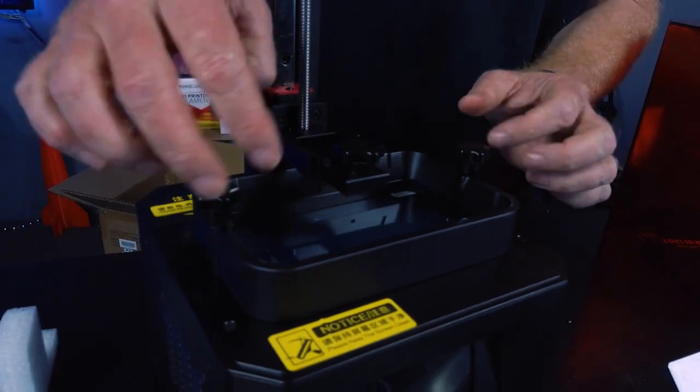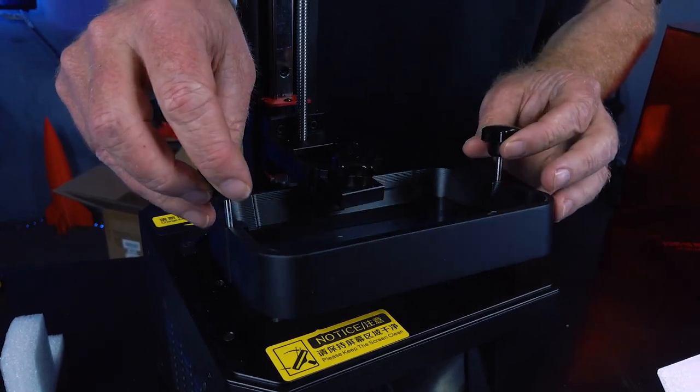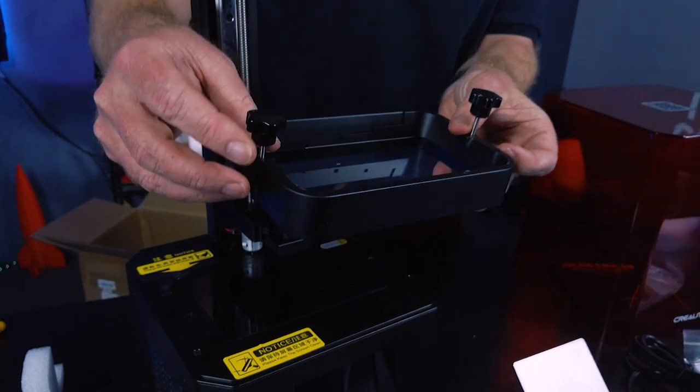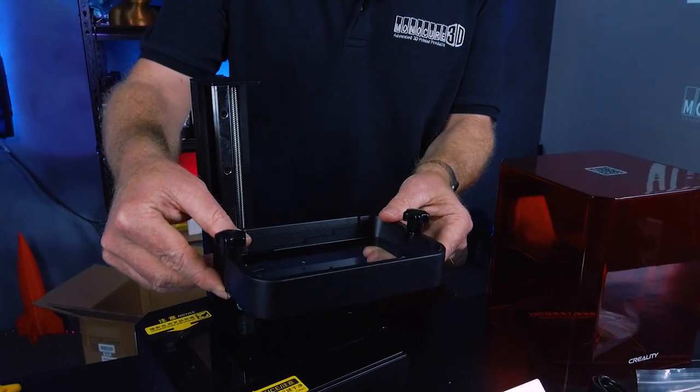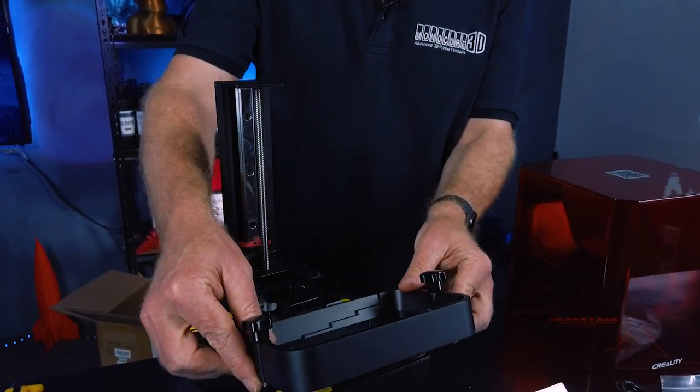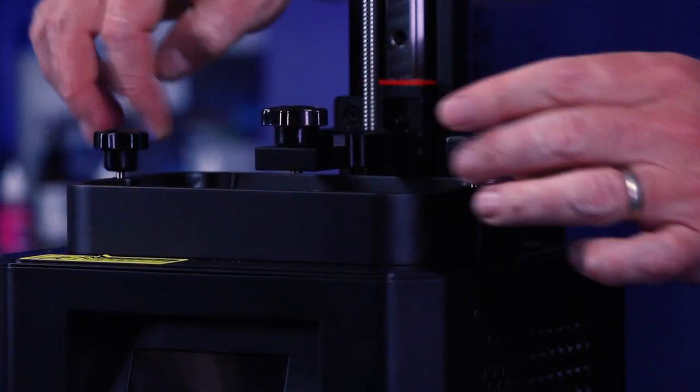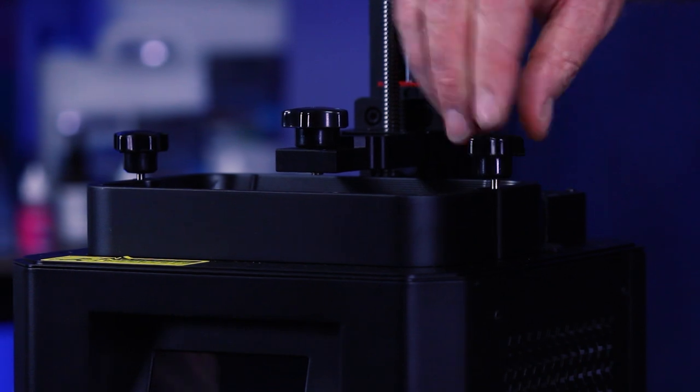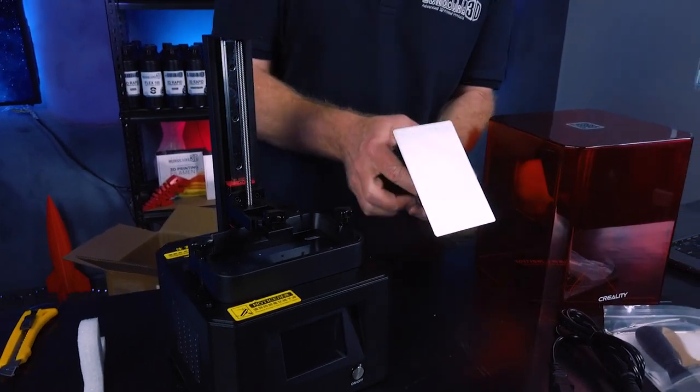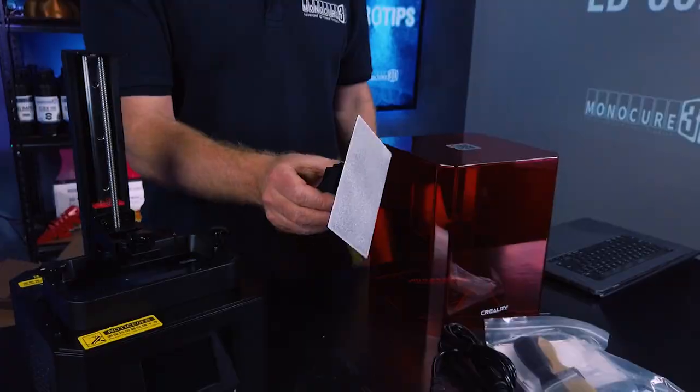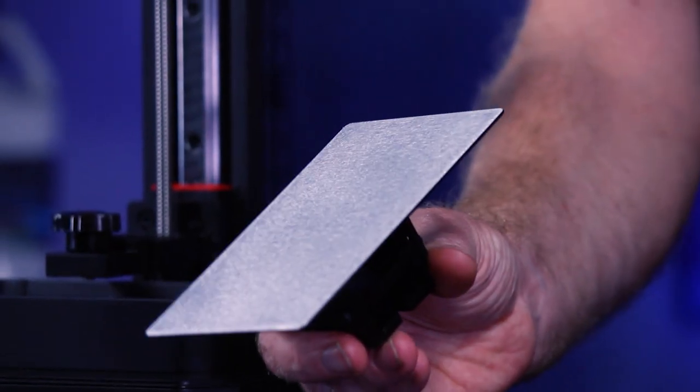So the vat looks bigger but it actually isn't. I've been told that it's the same size as the LD-002R and they are actually interchangeable. If you have that printer, you can use the vat from there into this. But this is a different size, these aren't obviously interchangeable, but it is slightly bigger which is an advantage.